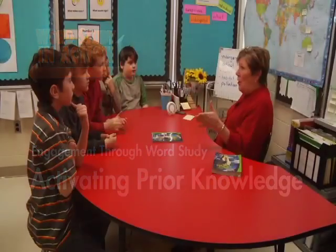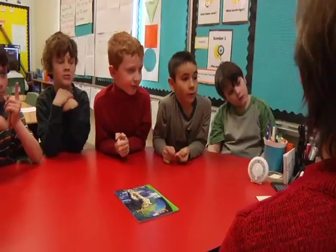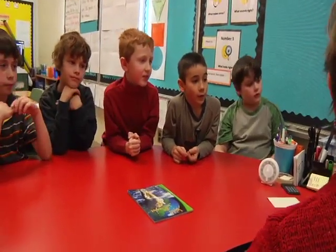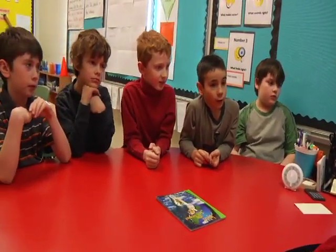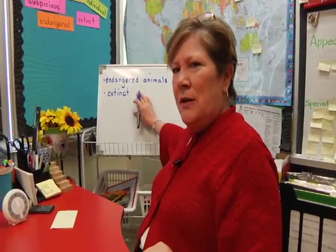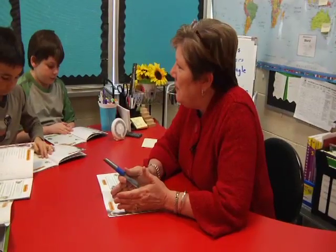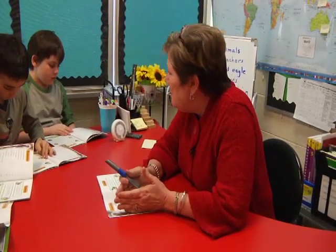At the beginning of this guided reading lesson, students are shown a non-fiction resource based on the theme of endangered species. They use their schema for this topic to predict vocabulary that may appear in the text. In the process, the teacher helps them to clarify the meaning of terms and to examine word structure.